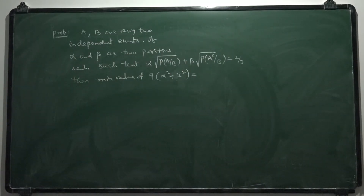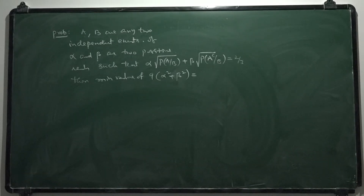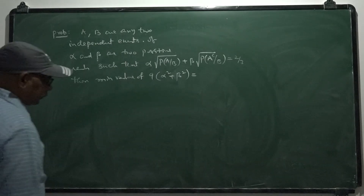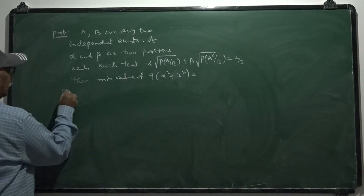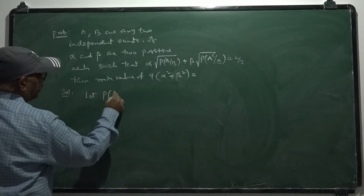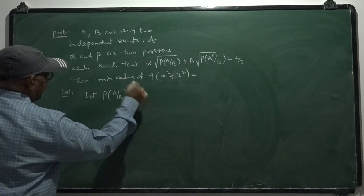You may expect such questions in mains. A and B are any two independent events. If alpha and beta are two positive reals such that the given condition holds, find the minimum of 9 into alpha squared plus beta squared. Let the conditional probability of A given B equal small p, and p is always greater than zero.